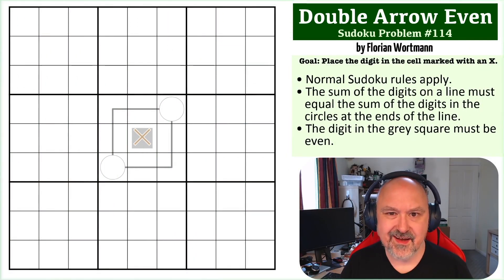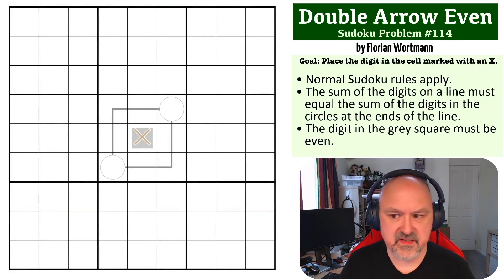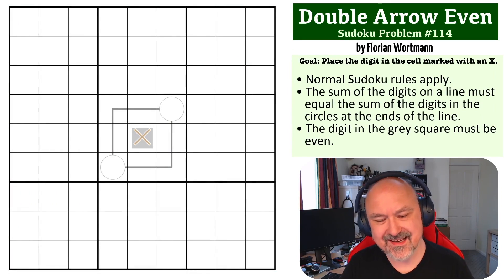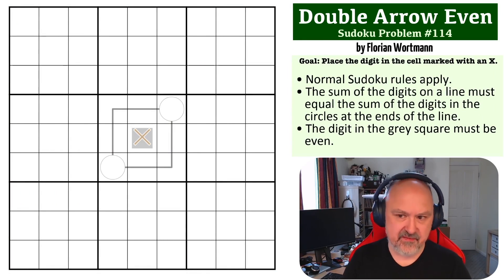Hey everyone, this is Brimster and this is number 114 in the Sudoku problem series. This is a Double Arrow Even problem by Florian Wortman, and the double arrow constraint is one we may not have seen on the Sudoku problem series before.